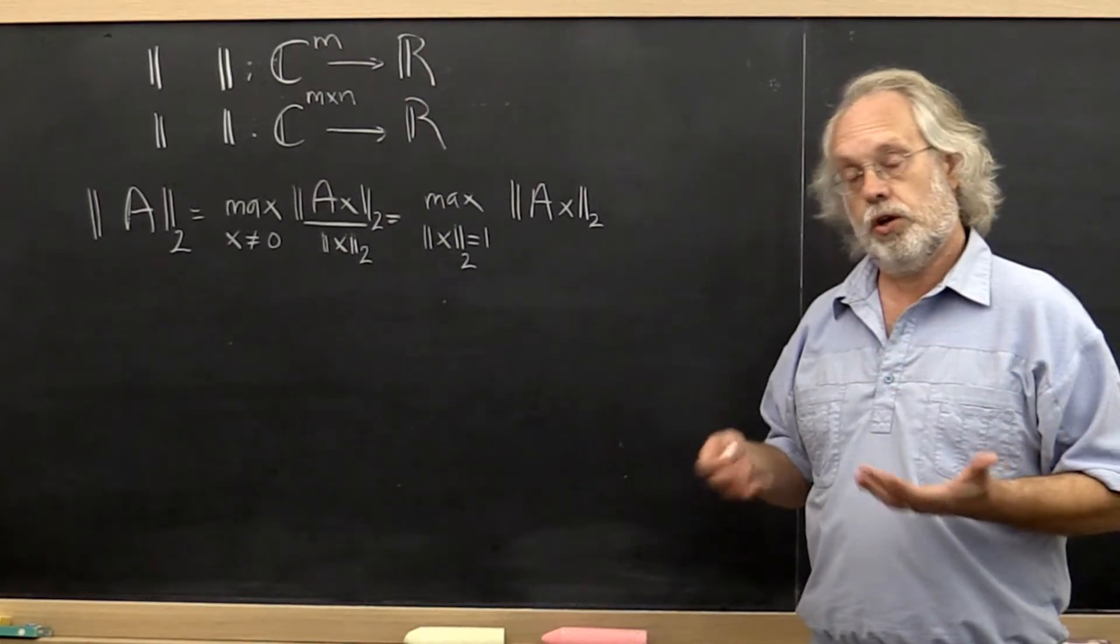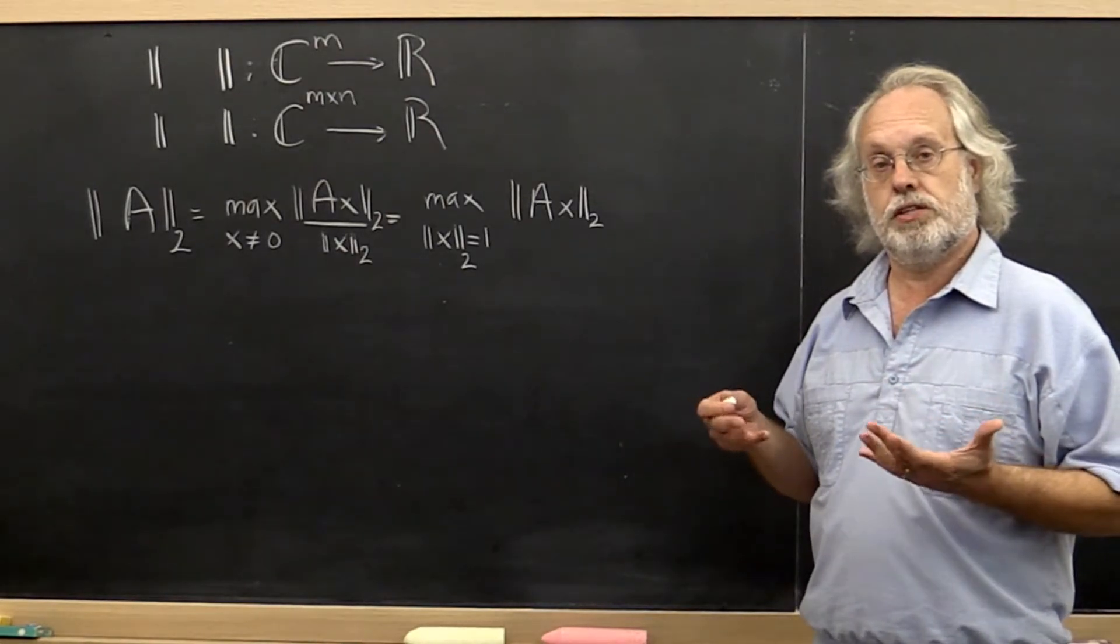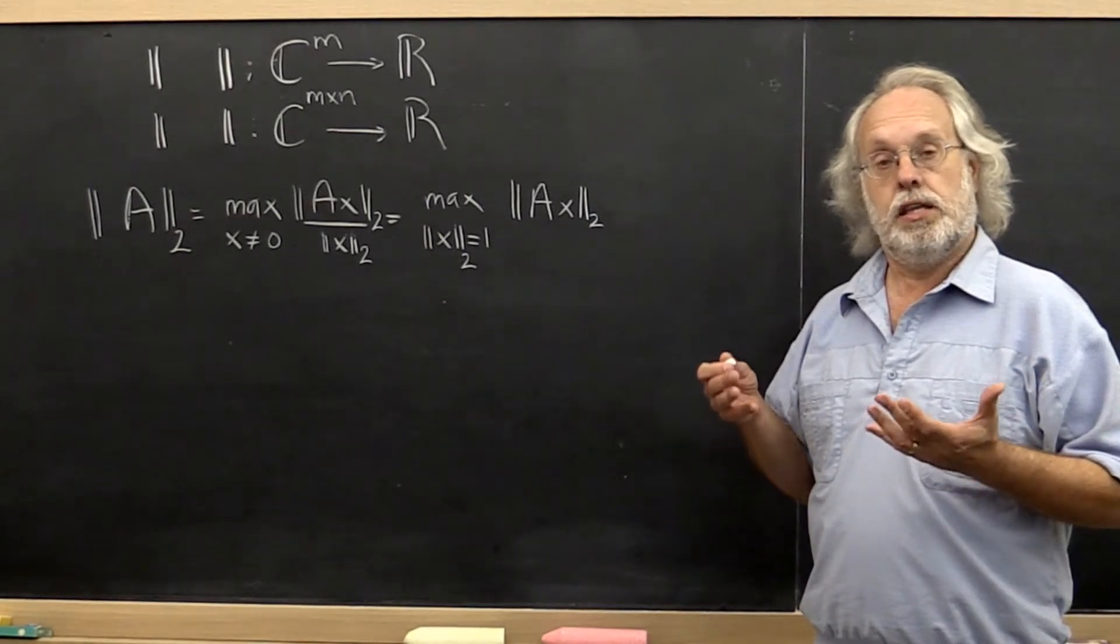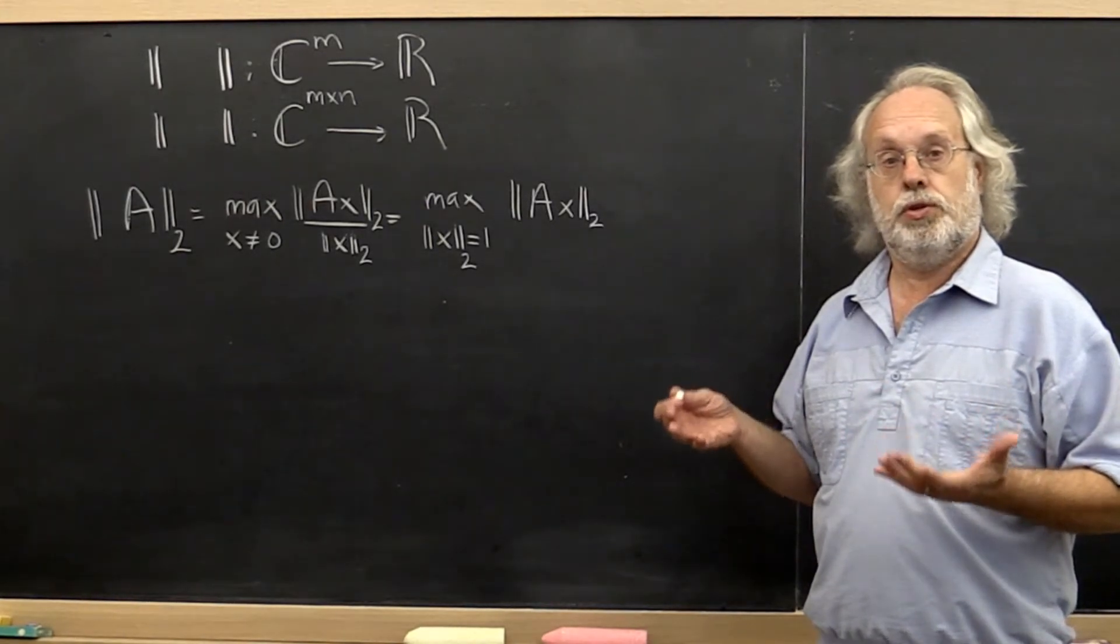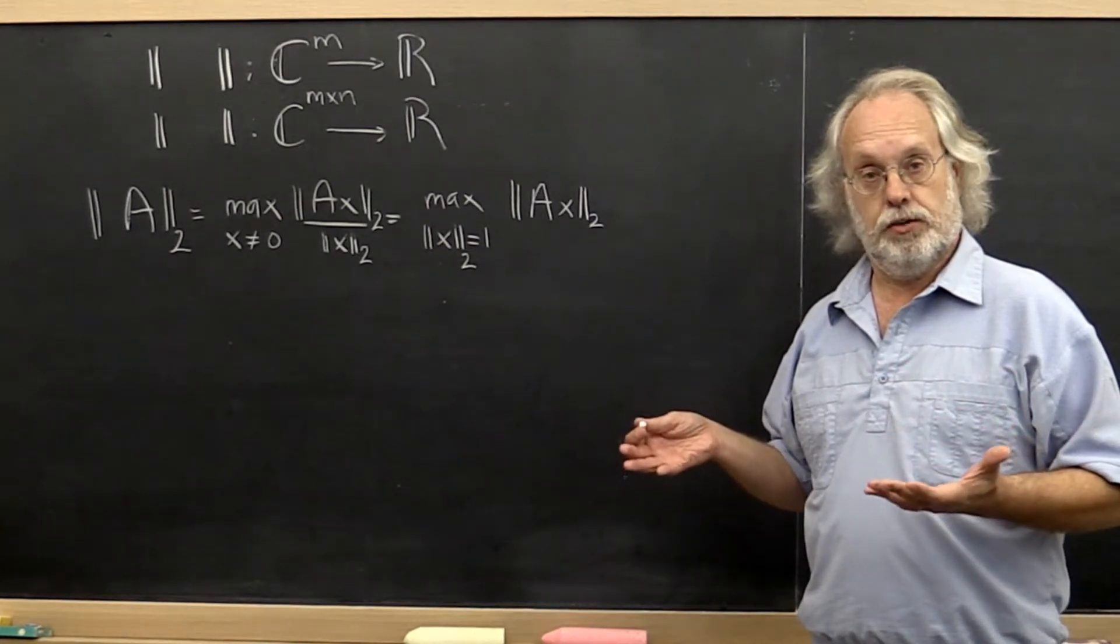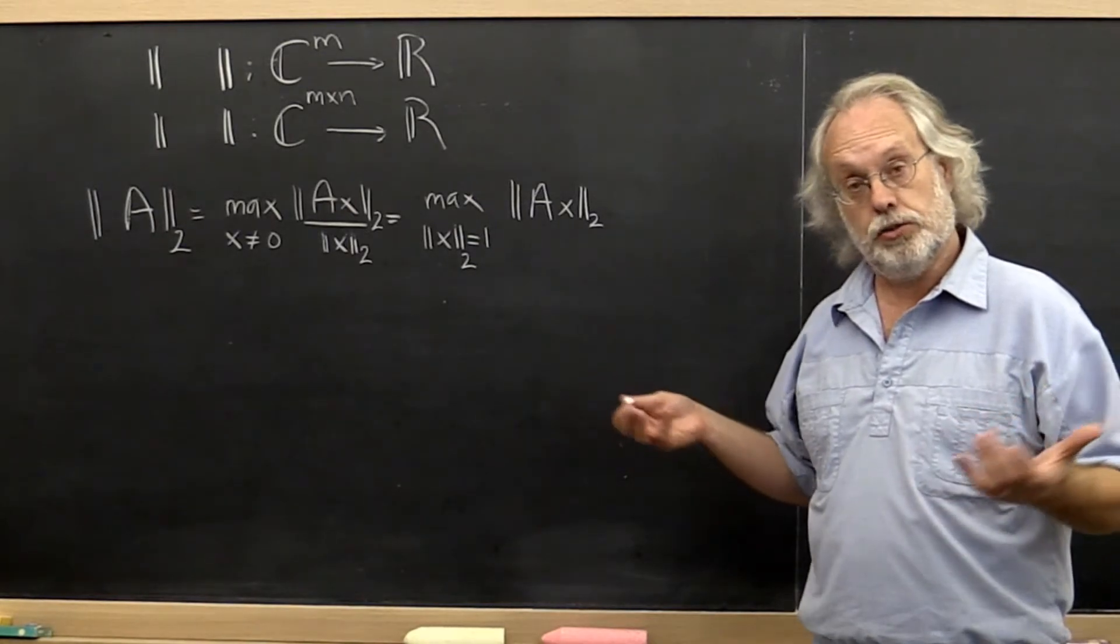Later in the course you're going to find out that if the matrix is Hermitian, symmetric, then the 2-norm is equal to the magnitude of the largest eigenvalue, largest in magnitude.